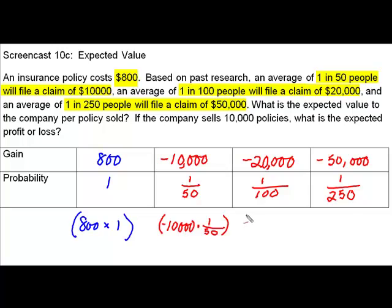The third scenario shows us our loss of $20,000. We will be multiplying that by its probability, which is 1 one-hundredth. And our fourth scenario shows a loss of $50,000. The probability of that happening is 1 two-hundred-fiftieth. Now these probabilities need to be combined, and we do that with addition.